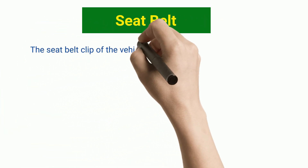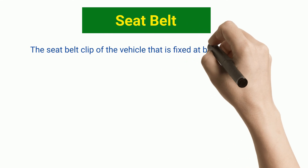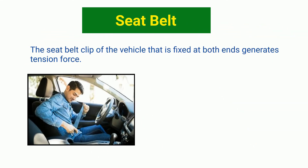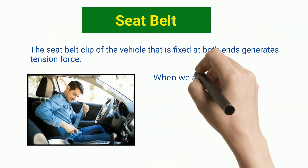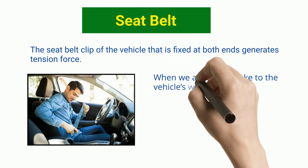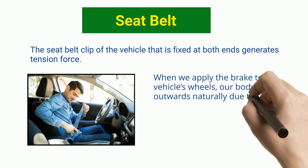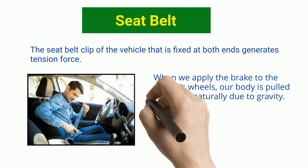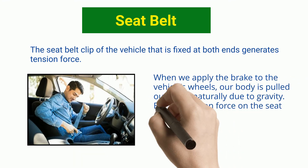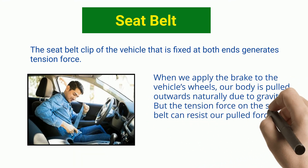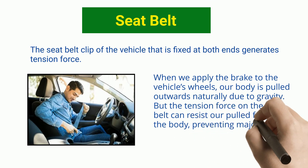Seat Belt. The seat belt clip of the vehicle, fixed at both ends, generates tension force. When we apply the brakes, our body is pulled outwards naturally due to inertia. But the tension force on the seat belt resists this pull on the body, preventing major to minor accidents.